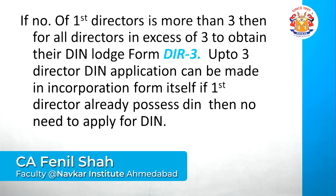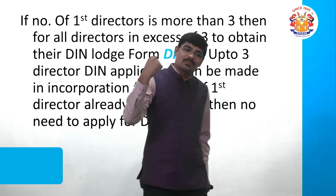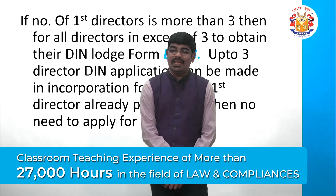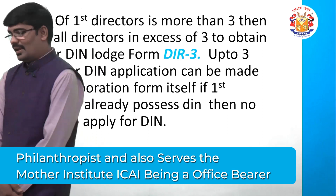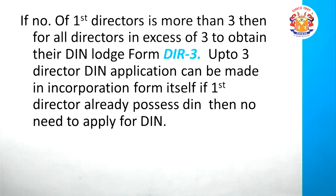For example, if we want 5 first directors and no one has DIN, then for any 3 directors you apply in Form INC-32, but for the remaining 2 directors you must file Form DIR-3. The provision is: if number of directors is more than 3, for all directors in excess of 3, file Form DIR-3 to obtain DIN, since up to 3 directors' DIN applications can be made in the incorporation form itself.